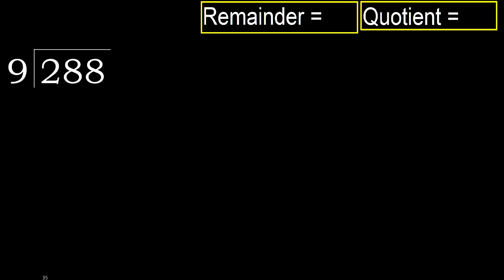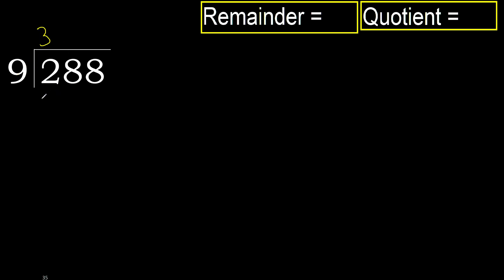288 divided by 9. 2 is less, therefore next — 28 is not less. With 28, what number multiplied by 9 is nearest to 28 but not greater? 9 multiplied by 4 is greater, so multiplied by 3.